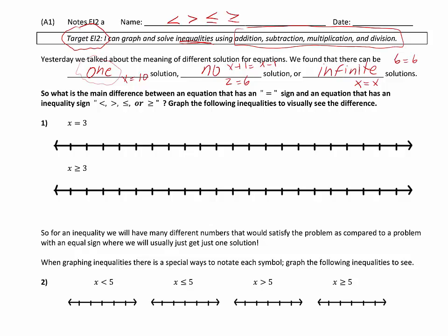Today we're going to be talking about equations that have many, many solutions — in fact, infinite. But you can't choose some numbers. I think you're going to see what happens with inequalities. You either get a certain set of numbers to the right, or a certain set of numbers to the left. If we had to graph the difference between x equals 3 and x is greater than or equal to 3, what would the picture look like and how would that be different?